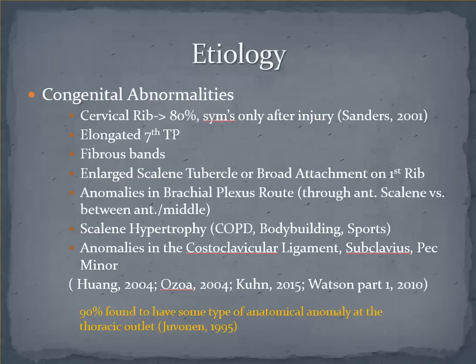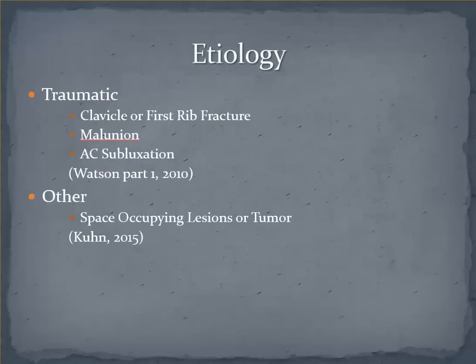We will see in later slides a common theme of high false positive rates in many of the tests designed to diagnose TOS, and thinking about the Javonen study, this makes some sense. As with any body region, the presence of structural pathology isn't always indicative of pain or loss of function — there are many other mediating factors. These are a few of the structural congenital factors that may be observed at the entrapment sites. Note that scalene hypertrophy isn't really a congenital factor, but can occur through years of structural adaptation. A much less frequent cause could be attributed to trauma in the AC or clavicular regions, or some type of space-occupying lesion that compresses the brachial plexus or vascular structures.